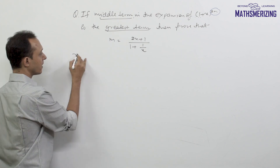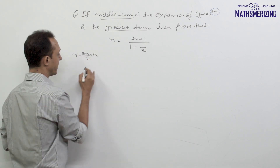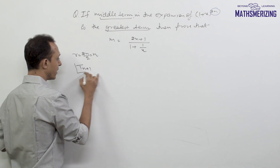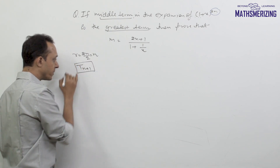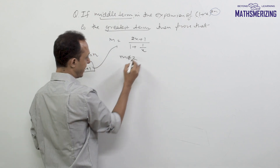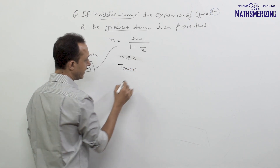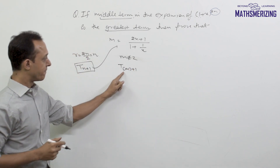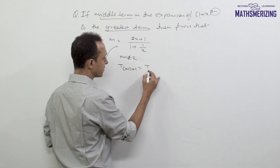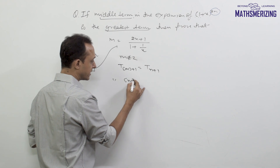For the middle term, r equals 2n/2, which is simply n, so the middle term is T_{n+1}. This term is also the numerically greatest term. The numerically greatest term is given by T_{floor(m)+1}, and this T_{floor(m)+1} should be equal to T_{n+1}.